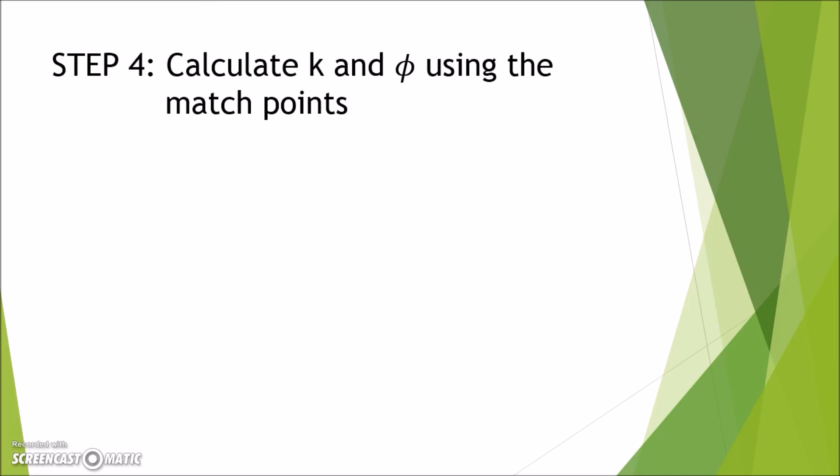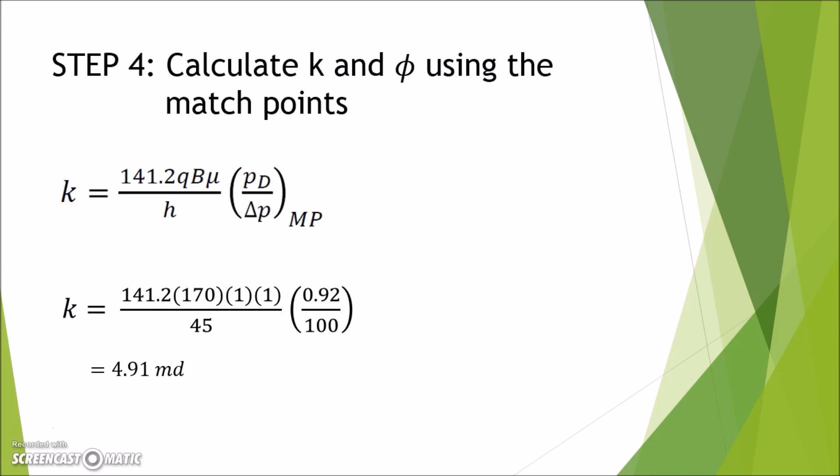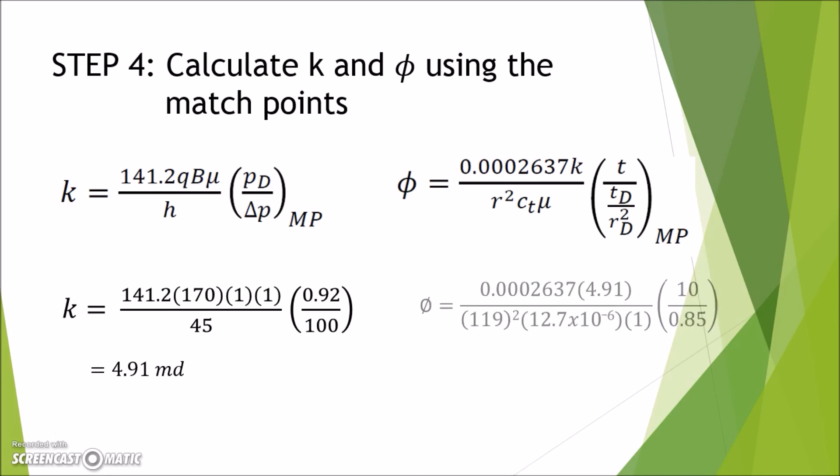Using the given permeability formula, we only need to put in each values inside, as follows. And we get the value of permeability to be 4.91 milli darcy. We use these values of k to calculate the values of porosity using the following formula. Just put in all the values inside the formula, and we get the values of porosity. The values of porosity we obtain from the calculation is 0.085, which equals to 8.5% of porosity.